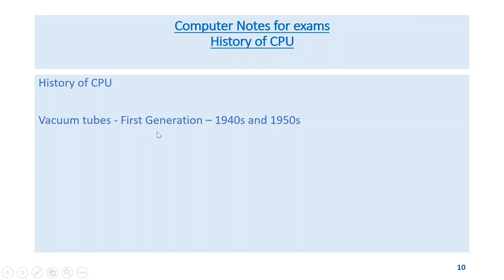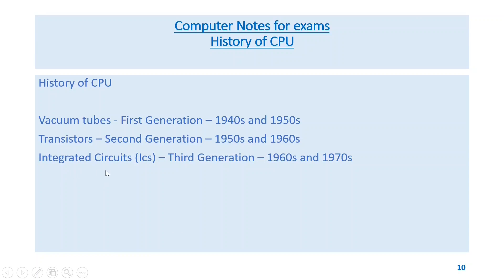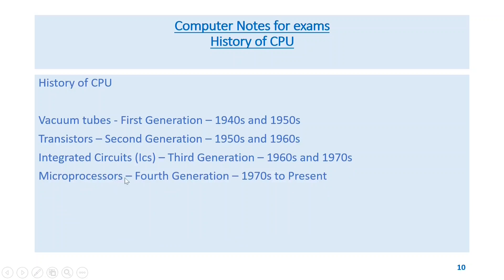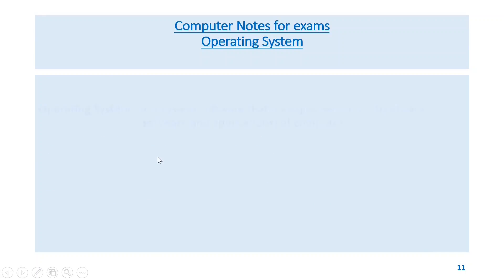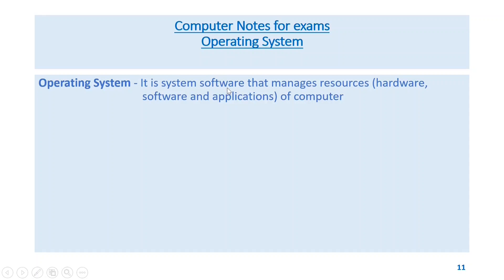History of CPU: vacuum tubes (first generation, 1940s–1950s); transistors (second generation, 1950s–1960s); integrated circuits or ICs (third generation, 1960s–1970s); microprocessors (fourth generation, 1970s to present); and artificial intelligence (fifth generation, present and future of CPU).